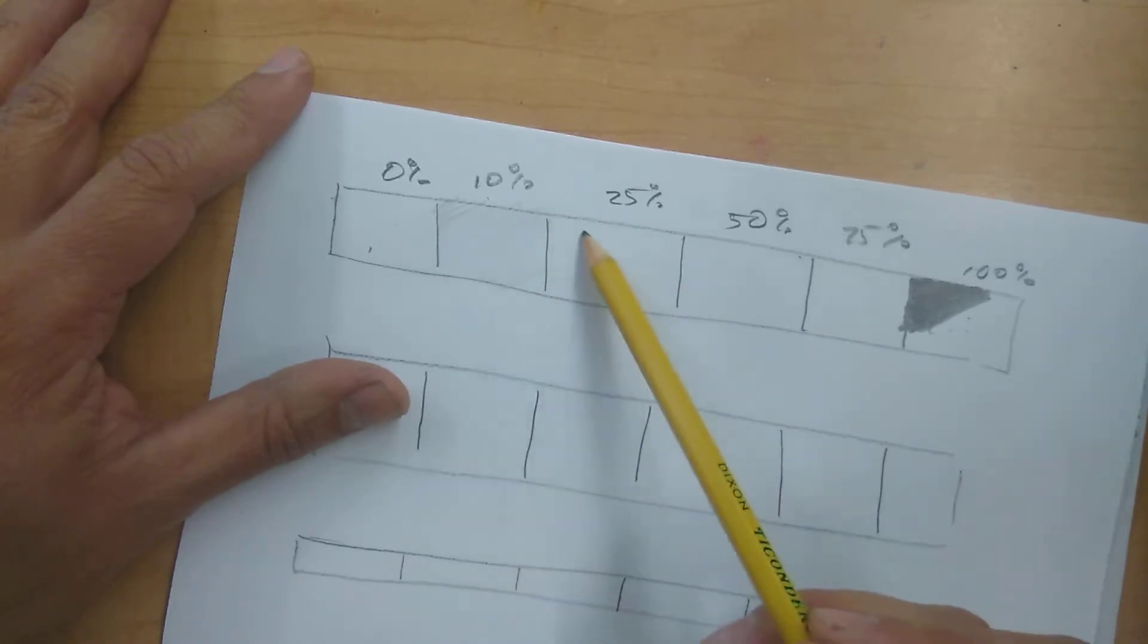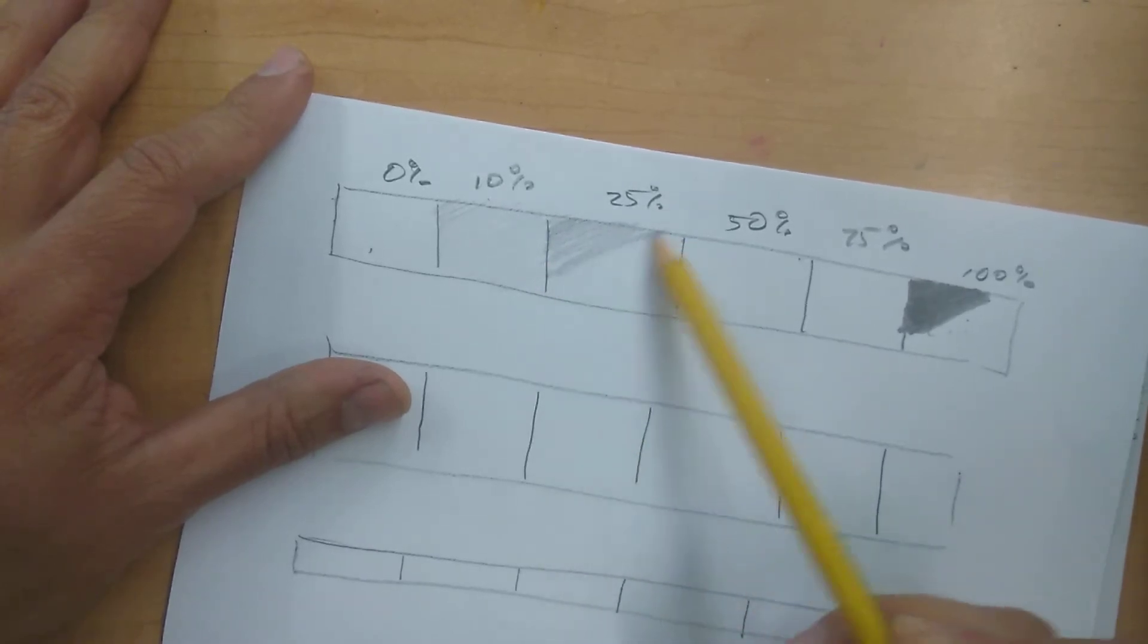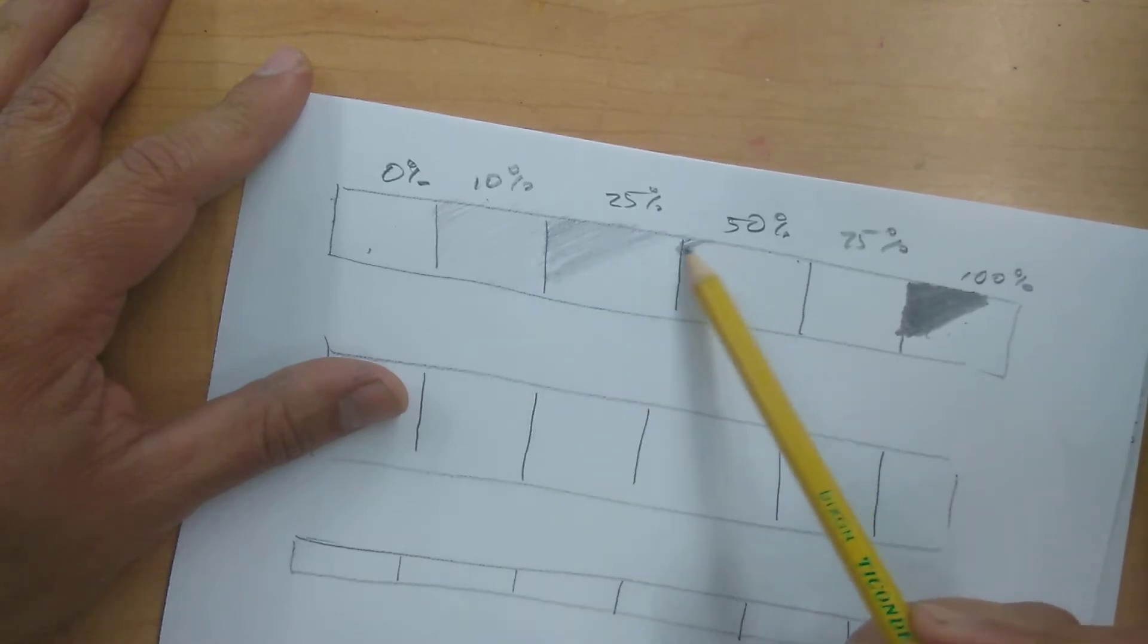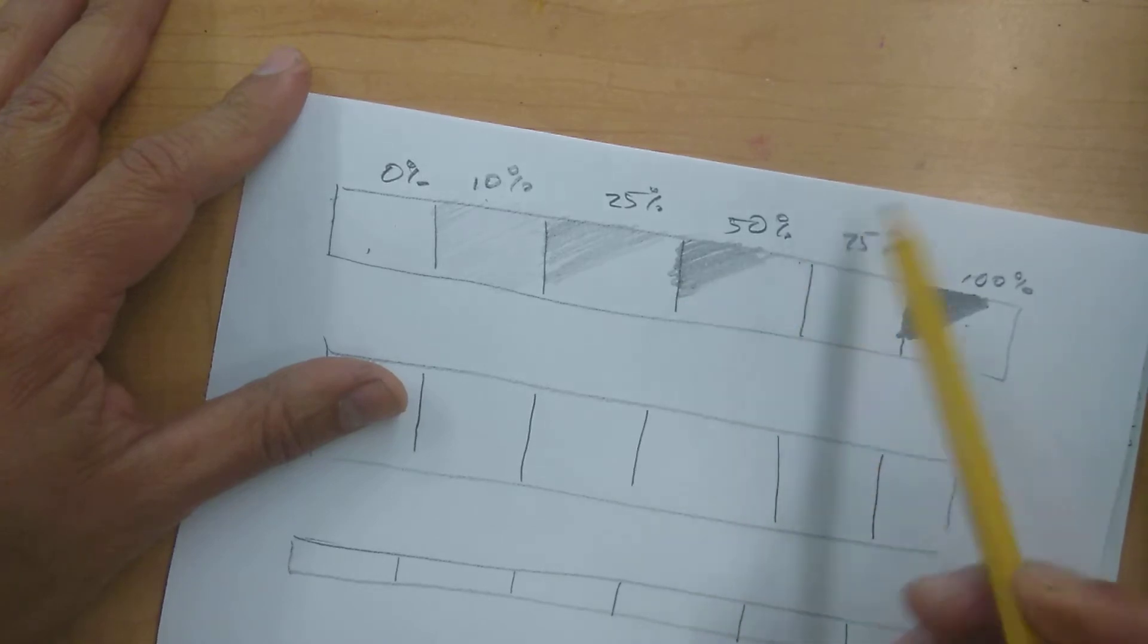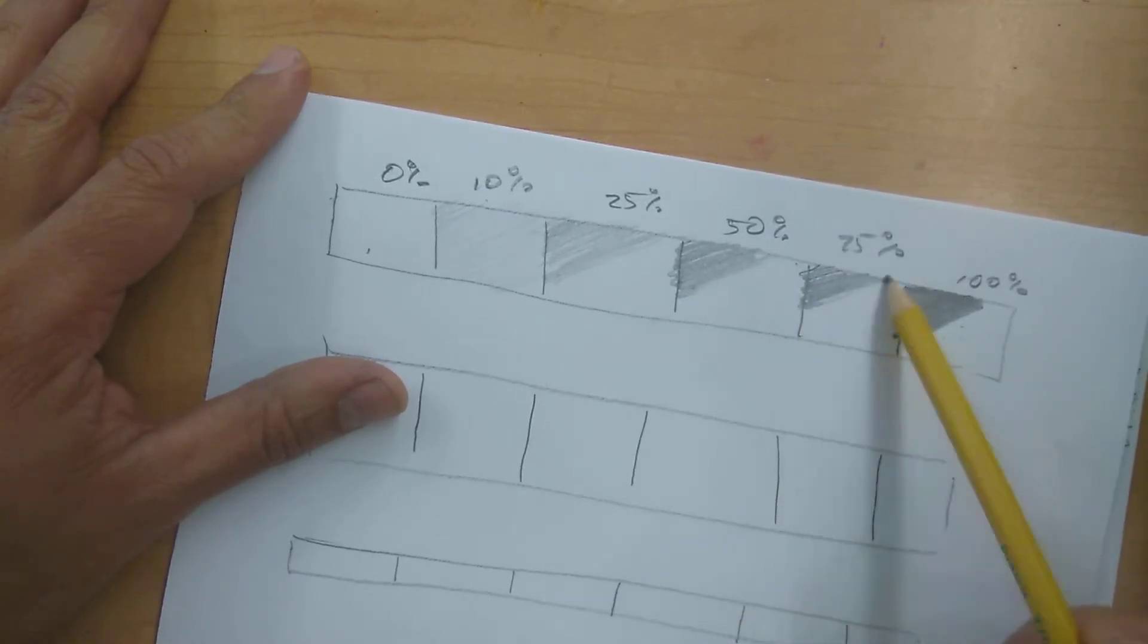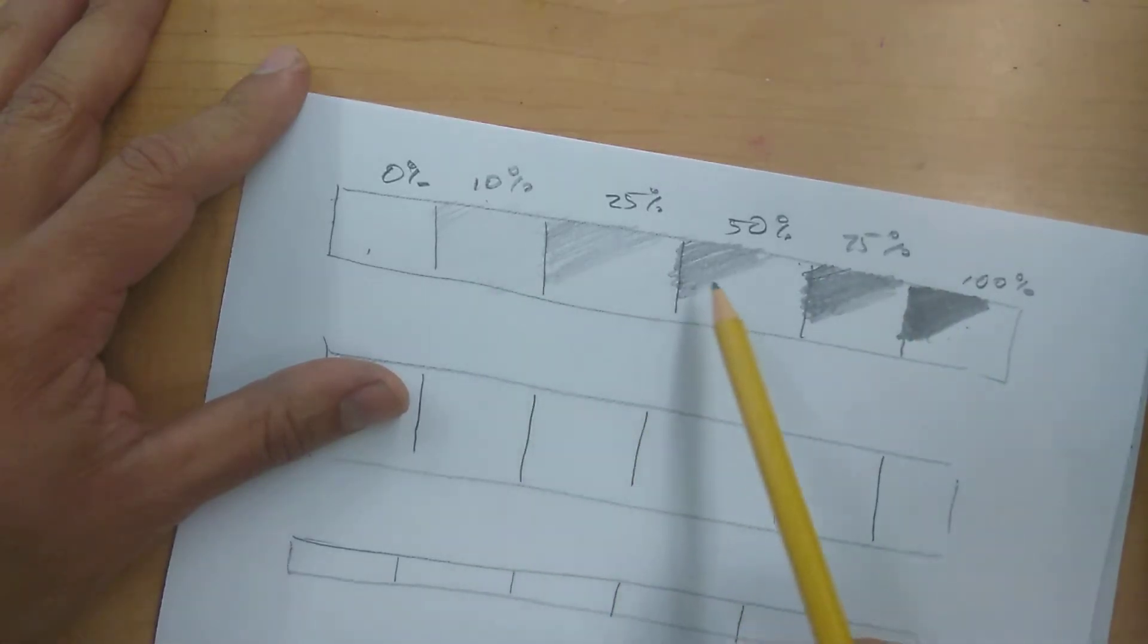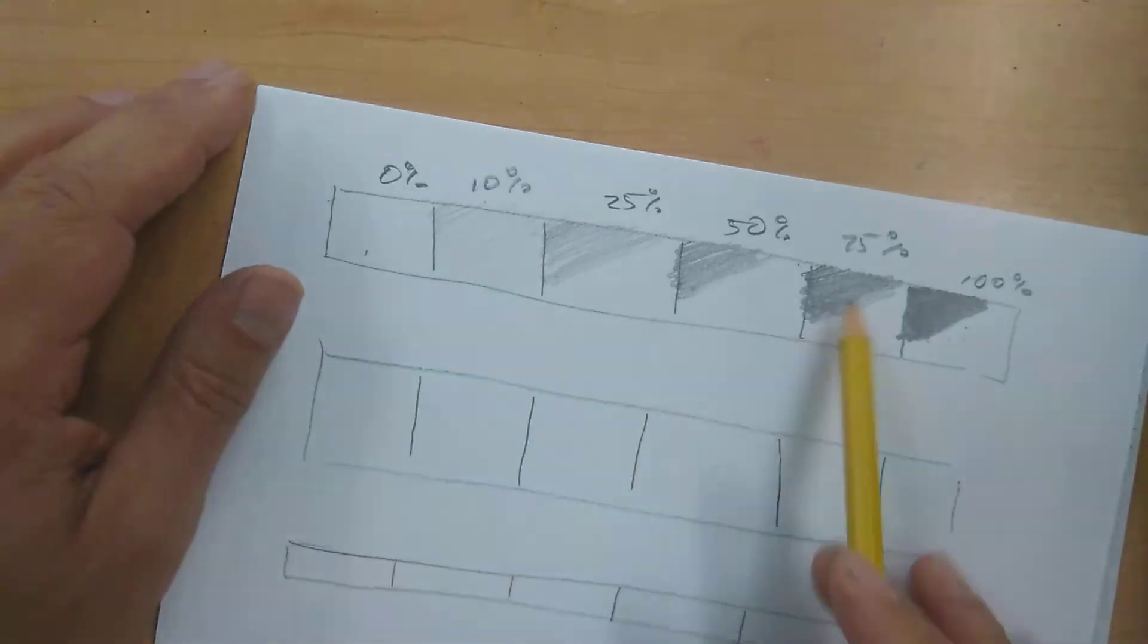But the next one is going to be a little bit darker than 10%. I'm not going to shade the whole thing just for speed and time. Next one, I go a little bit stronger. And then even darker. So there's more pressure as I'm working on these. So it should gradually be getting darker.